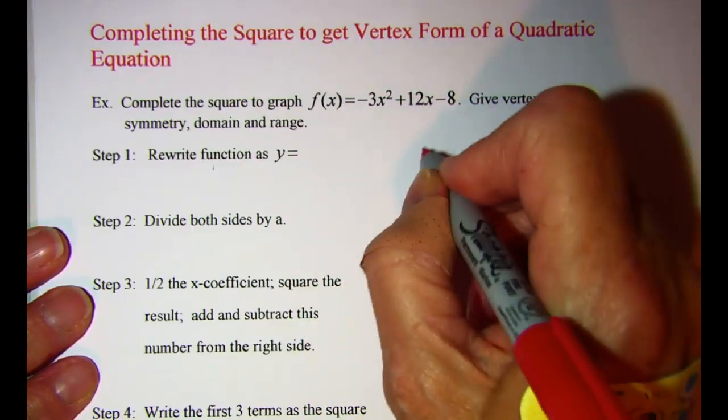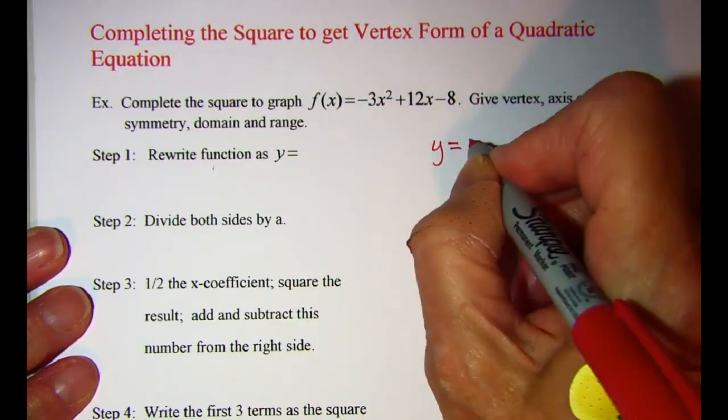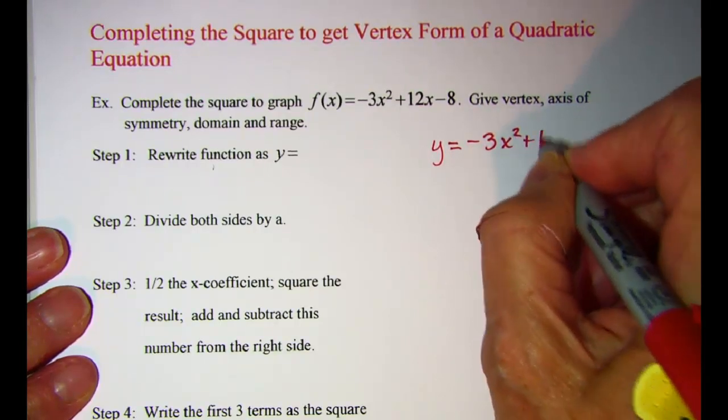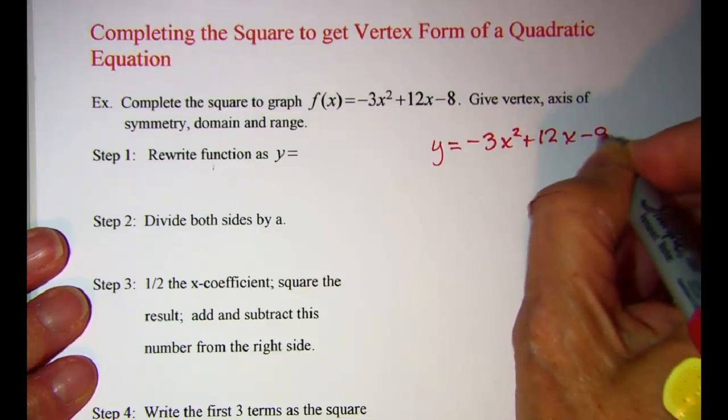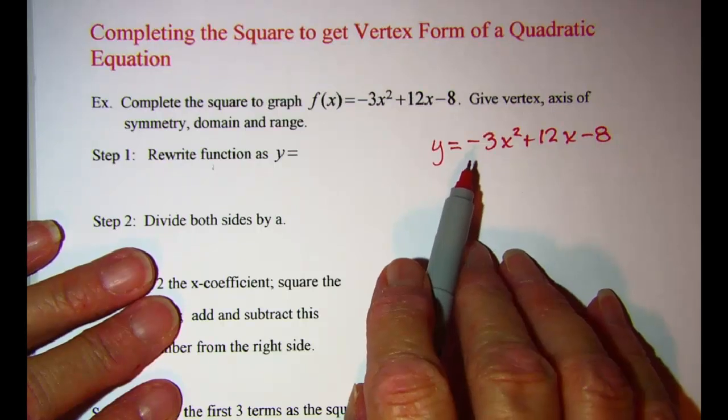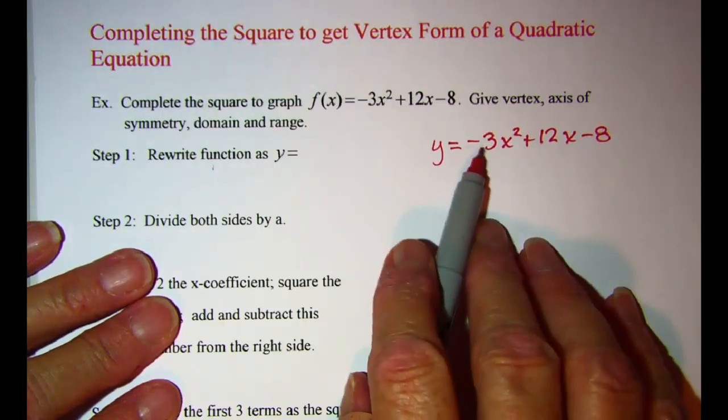So our equation now is y equals negative 3x squared plus 12x minus 8. Step 2, we have to divide both sides of the equation by negative 3.